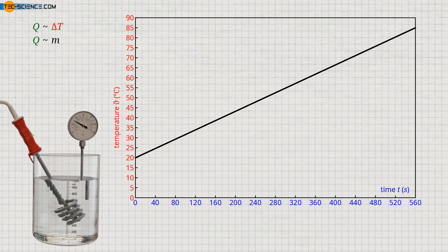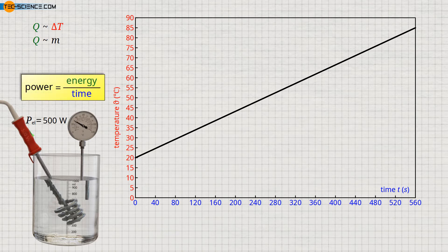We can determine the heat energy emitted by the immersion heater at any given time by its electrical power. If the immersion heater has an electrical power of 500 watts, then this power specification as the quotient of energy and time means that every second 500 joules of heat energy are emitted by the immersion heater, and with this amount of energy the water is heated.